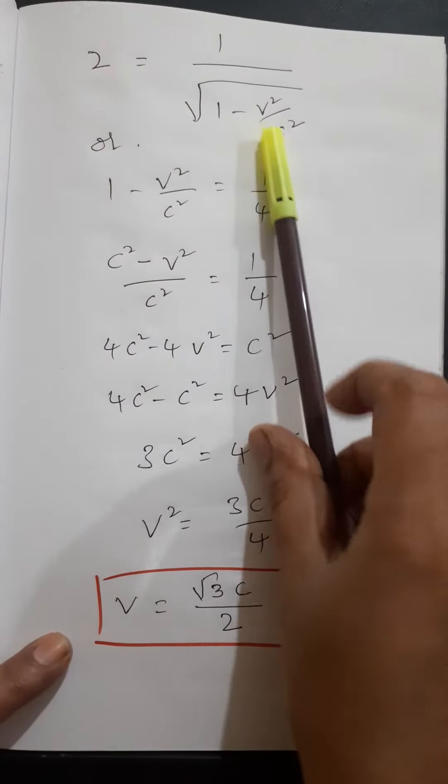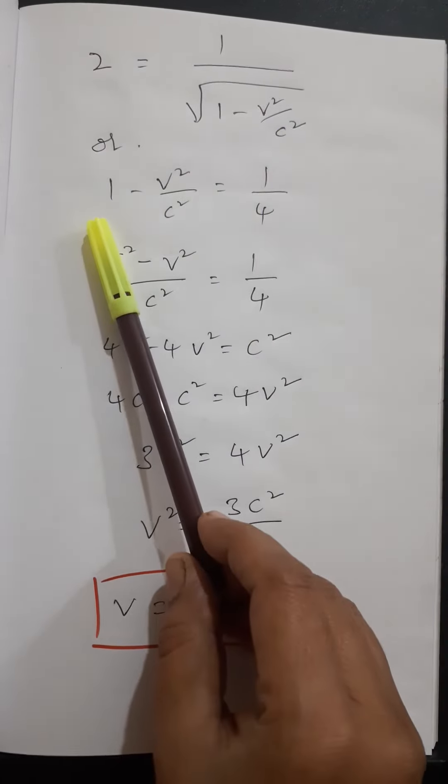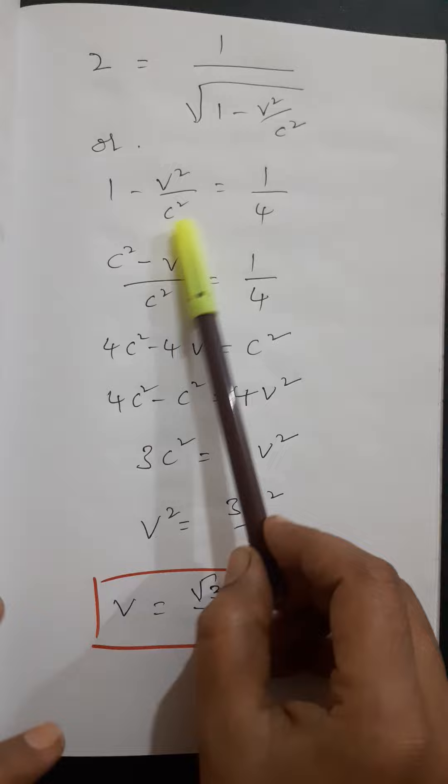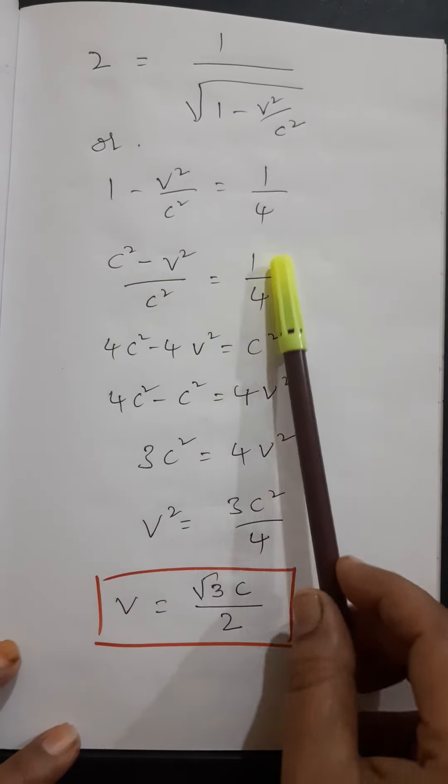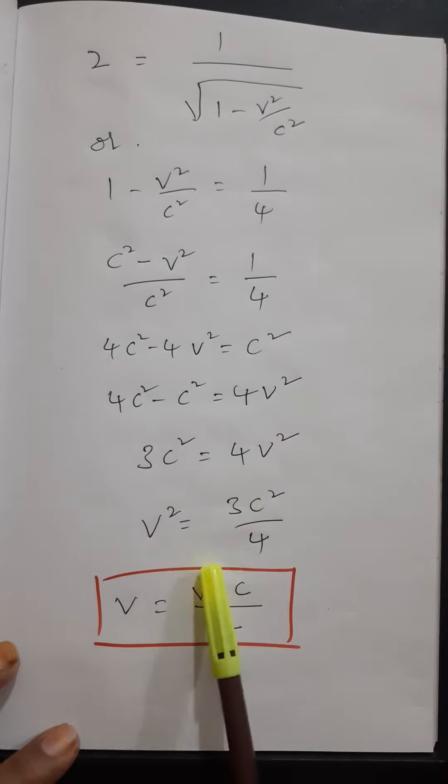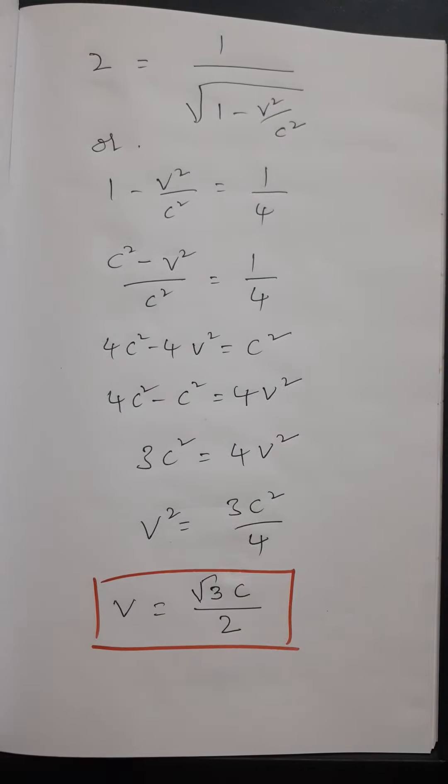Then we will get 1 divided by square root of 1 minus v squared by c squared. Then it can be written as 1 minus v squared by c squared equals 1 by 4. Then c squared minus v squared by c squared equals 1 by 4. So if you solve this equation, we will get v equals square root of 3c squared by 2.